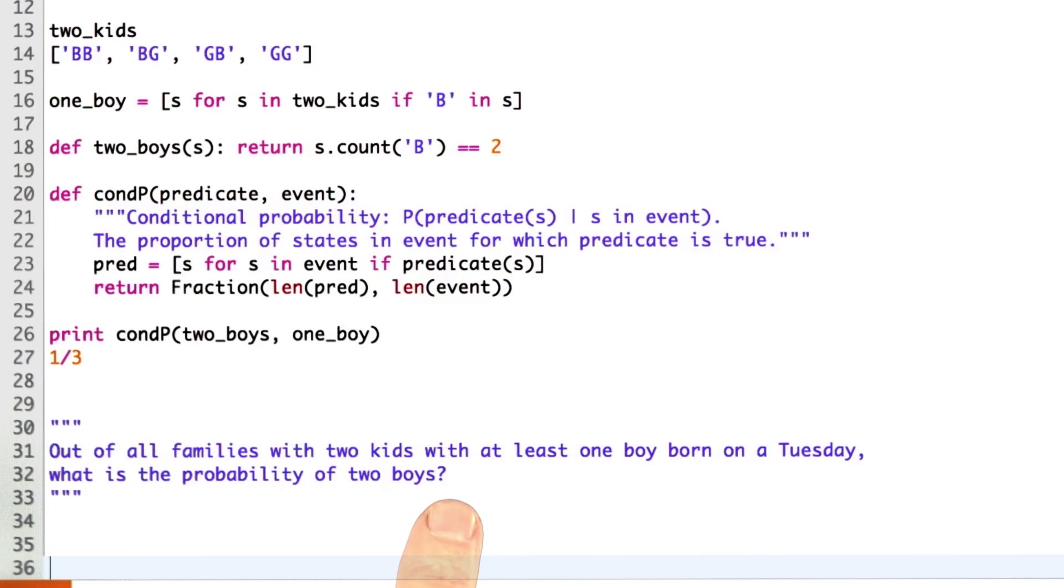Now you might think that the answer should be the same. It should still be one-third, because why does Tuesday matter? After all, the kid's got to be born sometime, and if it happens to be Tuesday, why would that be any different than any other day?